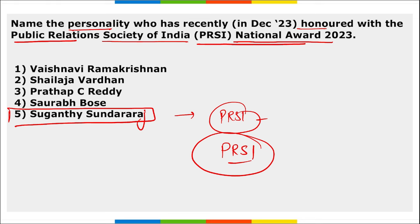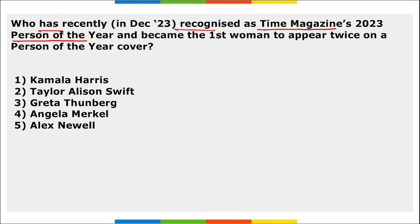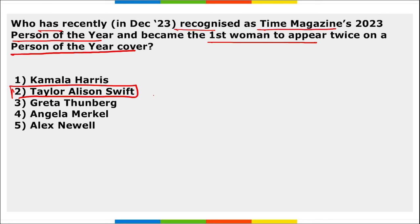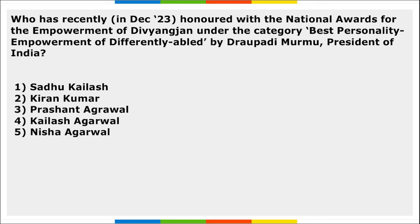Who has recently been recognized as Time Magazine's 2023 Person of the Year and became the first woman to appear twice on the Person of the Year cover? She is Taylor Swift. Taylor Swift has been recognized as Time Magazine's 2023 Person of the Year and became the first woman to appear twice on the Person of the Year cover.